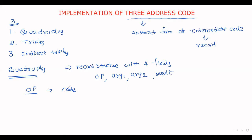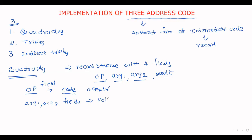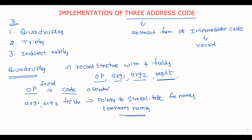The operation is performed between parameters specified in argument one and argument two. The argument one and argument two fields generally represent pointers to symbol table entries for the names — that is, between which variables we are performing the operations. Temporary names are also generated. Finally, whatever value we get is stored in the result field.